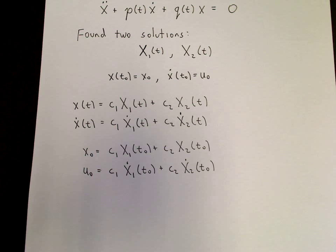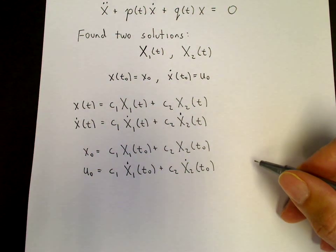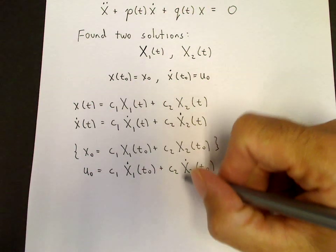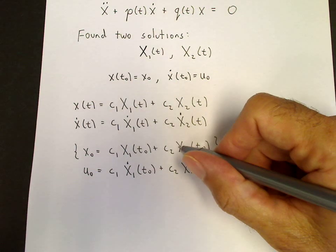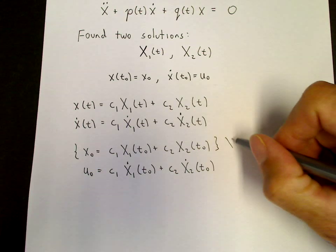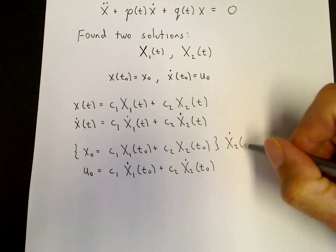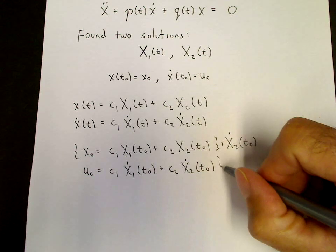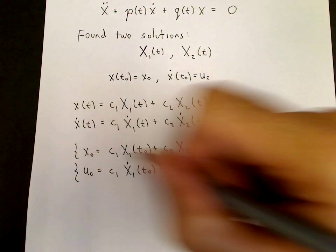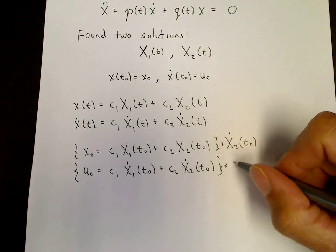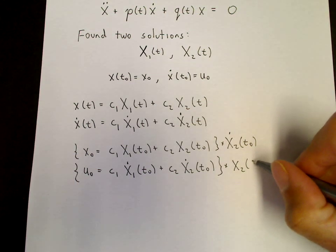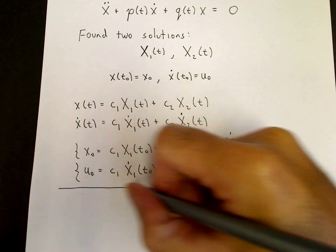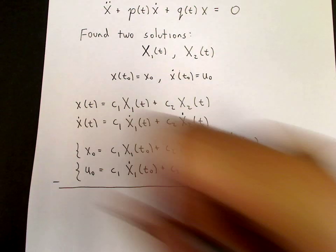So the solution method is straightforward. We take the first equation. If we want to eliminate c2, we multiply the first equation by x2 dot of t naught. If we want to eliminate c2, we multiply the second equation by x2 of t naught. And we take these equations and we subtract them.